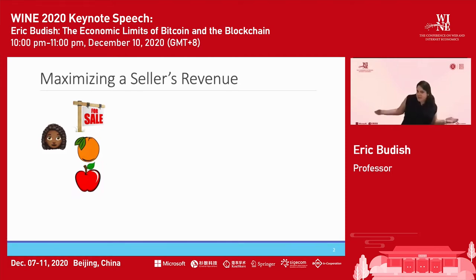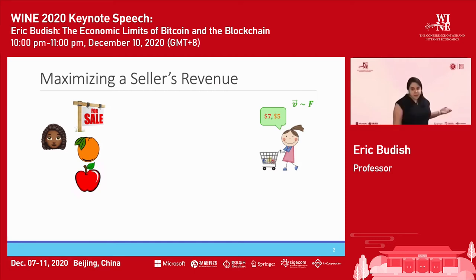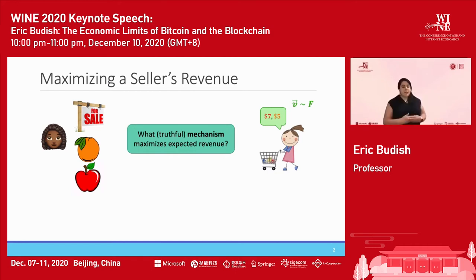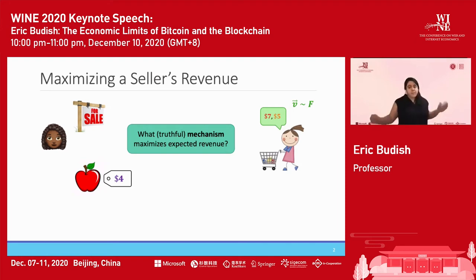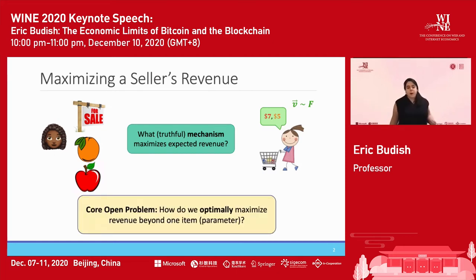One of the most fundamental questions within the algorithmic game theory community is: how can we maximize a seller's revenue? We have a seller trying to sell, for example, an apple and an orange. The buyer's value for the apple is $7 and for the orange is $5. Her values are additive, drawn from a prior distribution known to the seller. The question is: what truthful mechanism maximizes the seller's expected revenue? If the seller is only selling one item, this is completely resolved — she posts the best price, resolved since 1981 when Myerson won a Nobel Prize. As soon as we get to two different items, we know nothing. It is a core open problem.